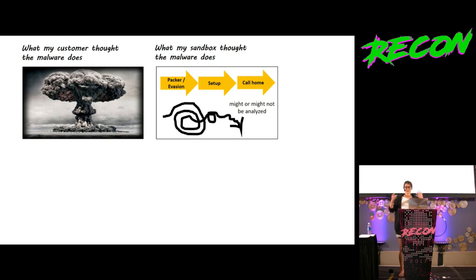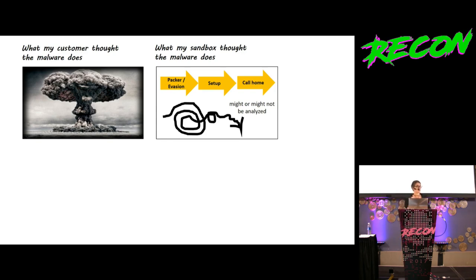A sandbox, by nature, can execute an executable that you hand over to it, and it can show you what the binary wants to show — which, in the case of a standard remote access tool or a standard banking trojan, is usually the setup. So this is, in very many cases, all that you see.